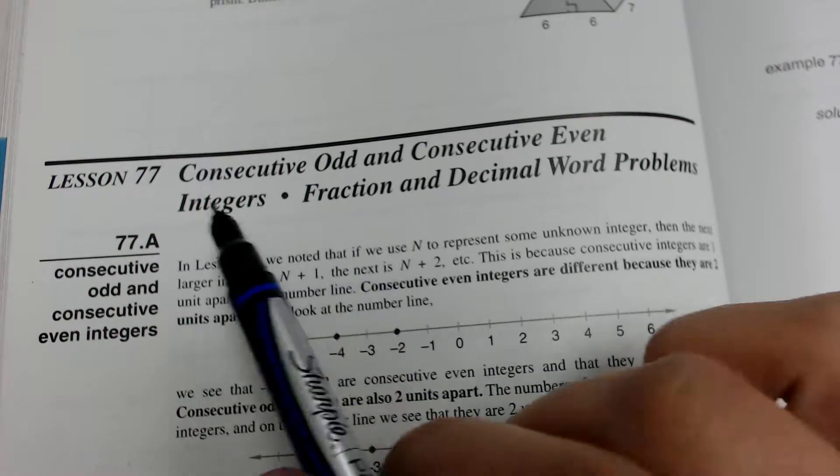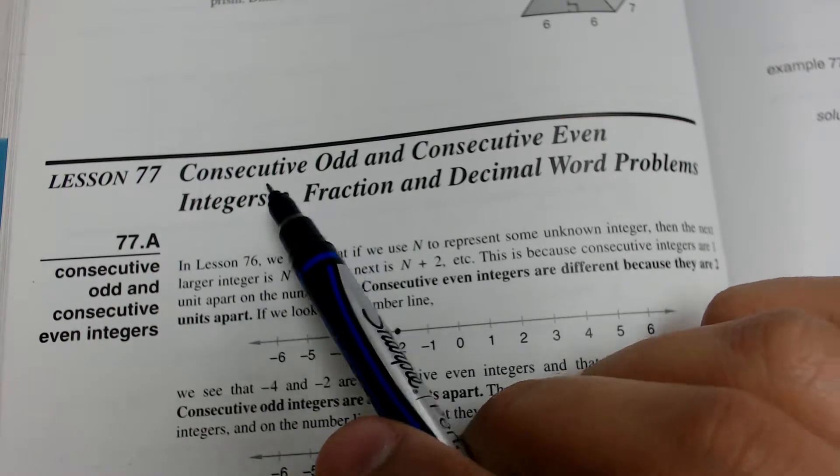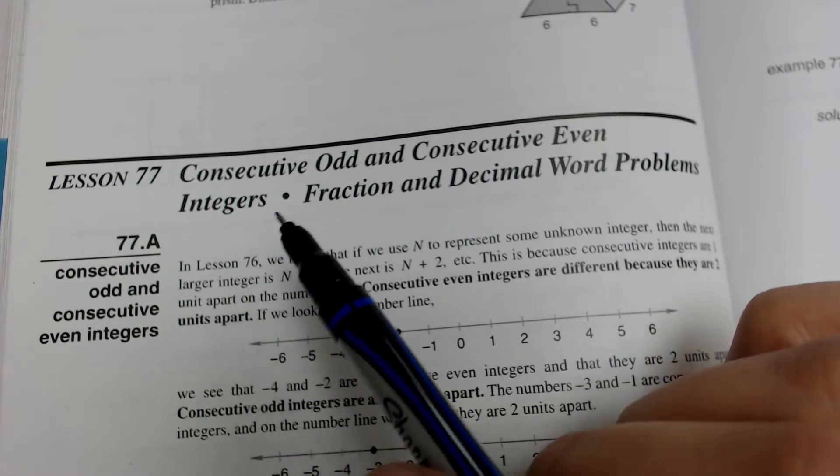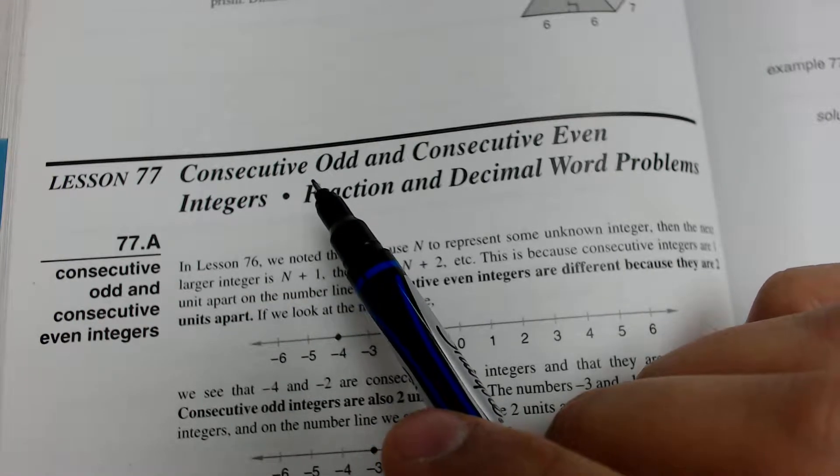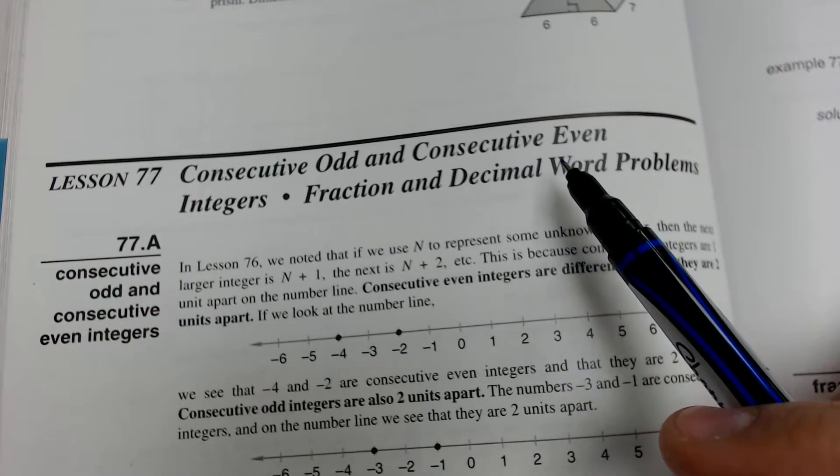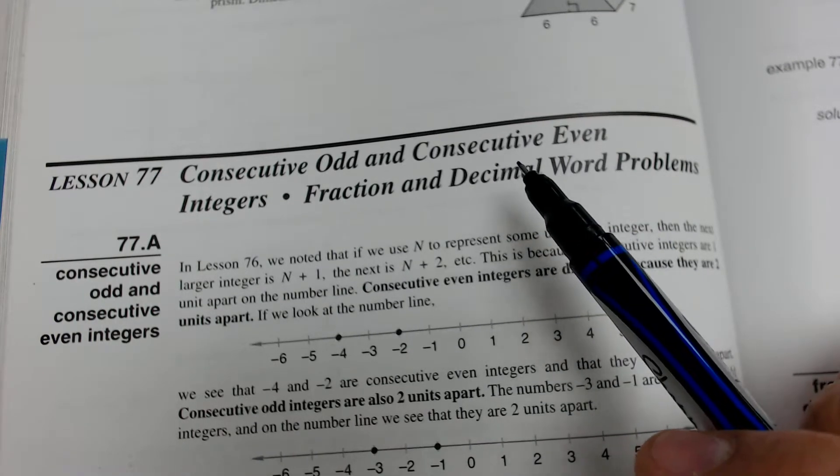What these two phrases mean, consecutive odd integers, is just talking about odd numbers that follow each other. For example, 1, 3, 5, 7, 9, 11. And then consecutive even integers would be even numbers that follow each other: 2, 4, 6, 8.